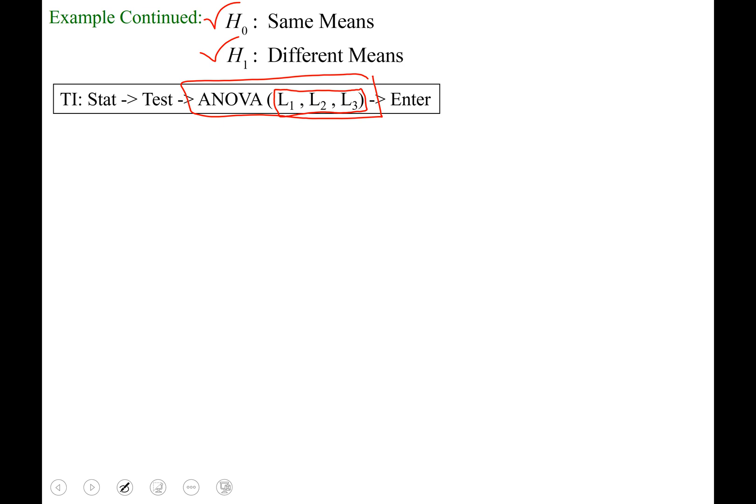Now we need L2. So hit Second. And the number 2. You should see the L2 on your screen now. Comma again. It's above the 7. And now we need L3. So everybody hit Second. And the number 3. Close parenthesis. And when we hit Enter, it's going to run the test of ANOVA on whatever data we put in L1, L2, and L3. So Enter.